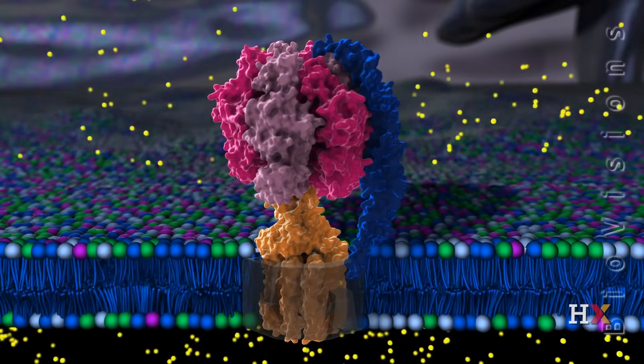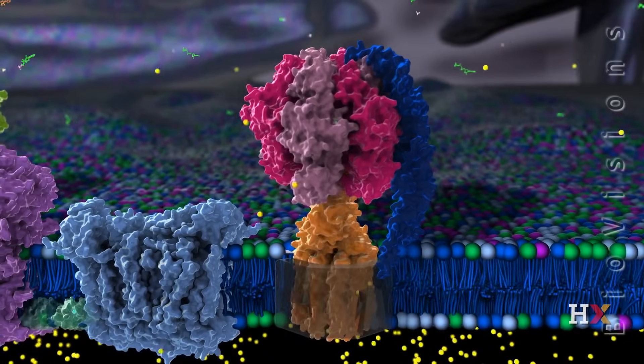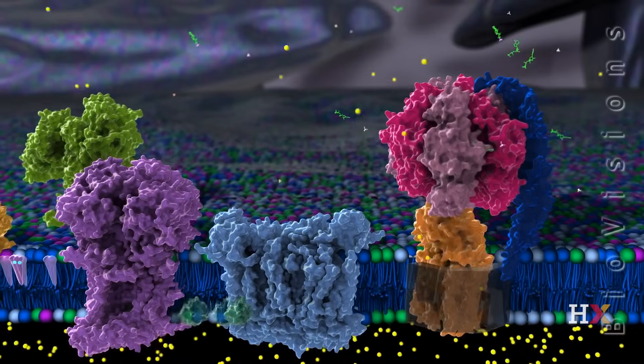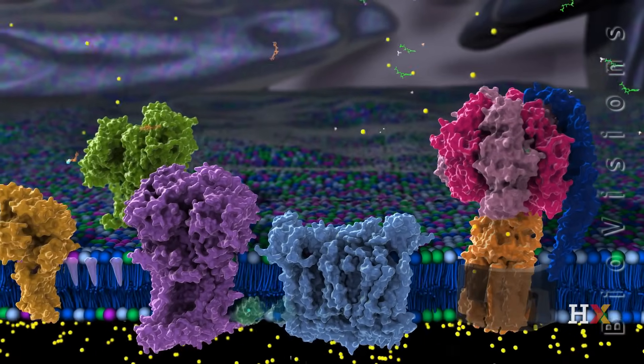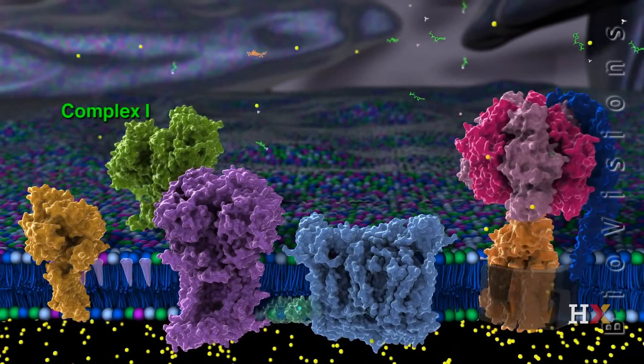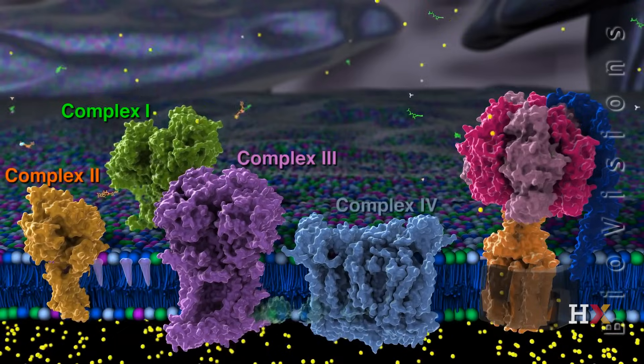Therefore, the protein complexes and small molecules that establish this gradient and maintain it play a central role in the life of the cell. At the heart of this system are four protein complexes, numbered one through four.